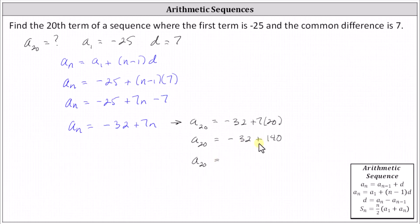This indicates a sub 20, the 20th term, is equal to negative 32 plus 140, which is 108. This is what the question is asking for us to determine. I hope you found this helpful.